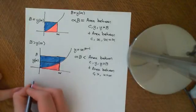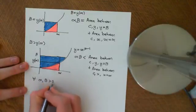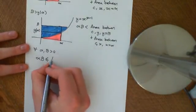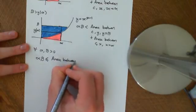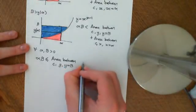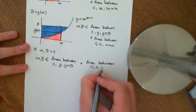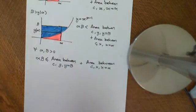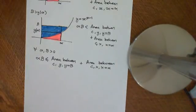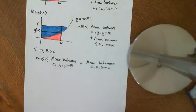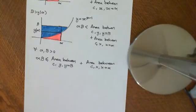So for all positive real numbers alpha and beta, the area of the rectangle alpha times beta is less than or equal to the area between the curve, the y-axis, and the line y equals beta, plus the area between the curve, the x-axis, and the line x equals alpha. This inequality holds for every possible case — whether beta is less than, equal to, or greater than y(alpha).